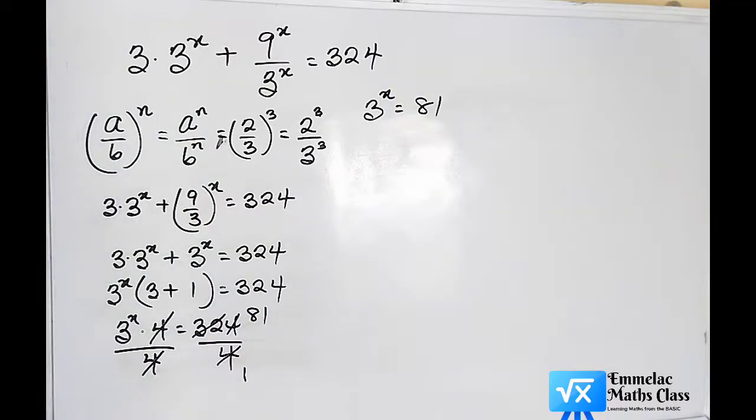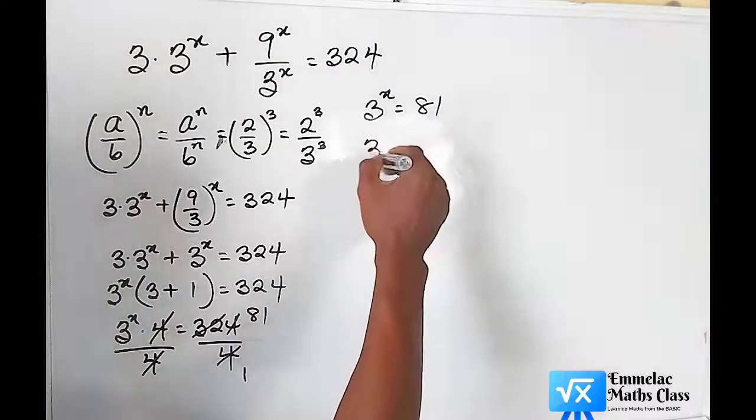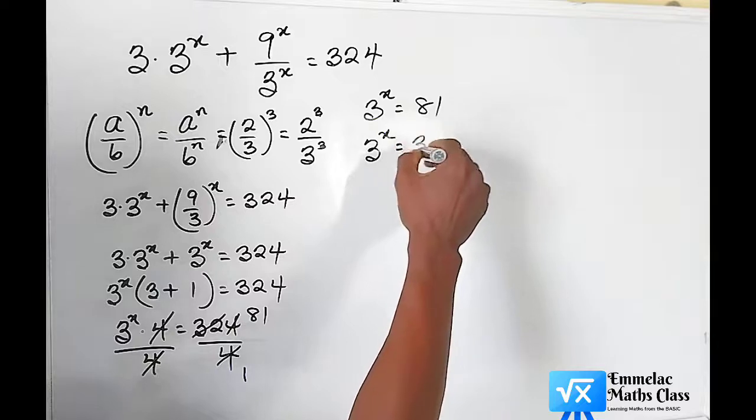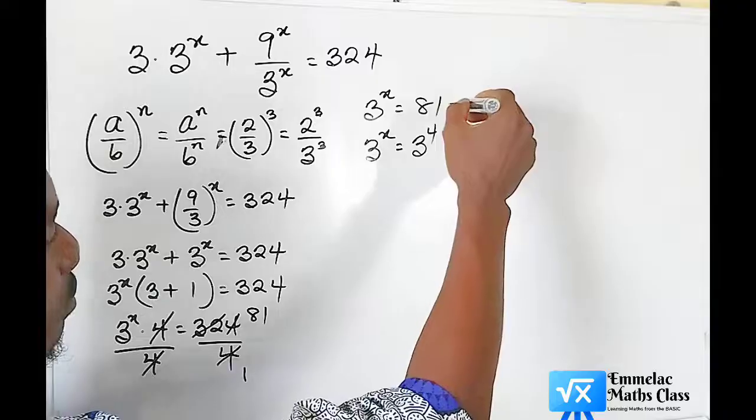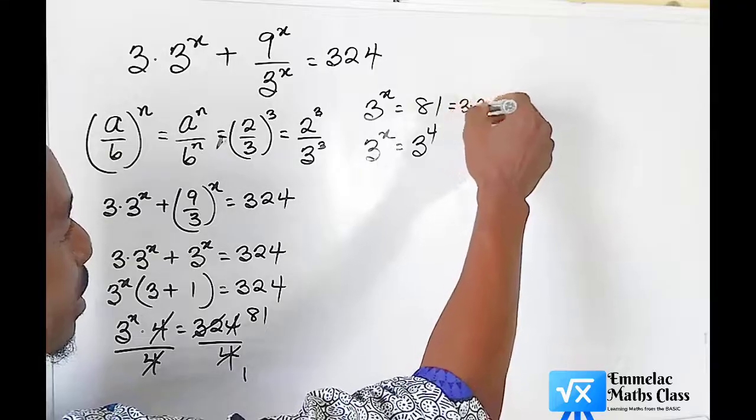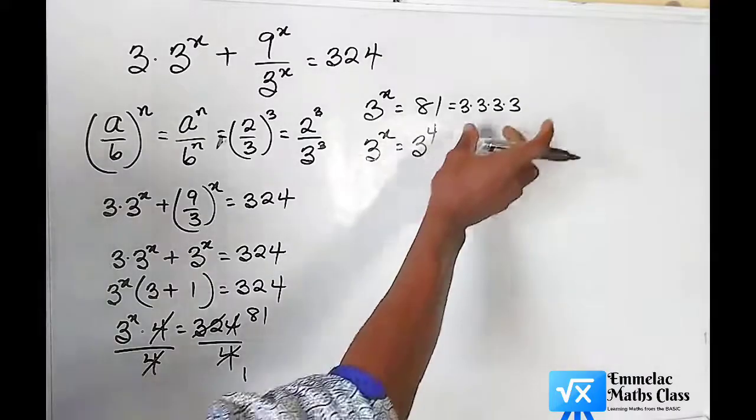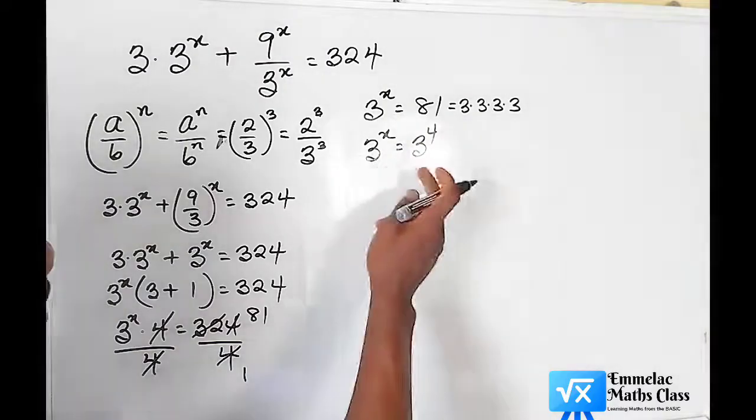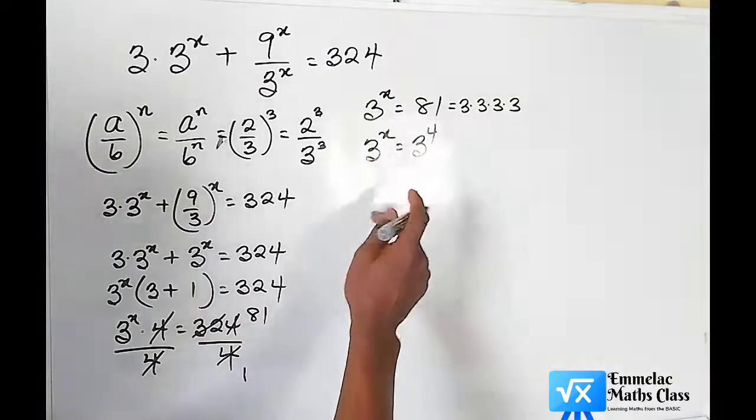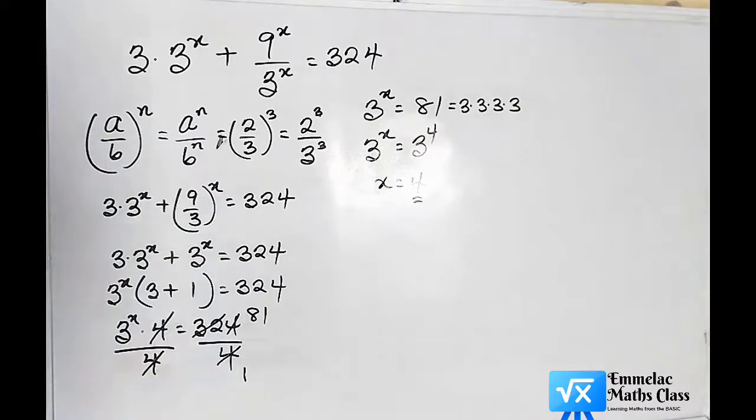Now since on the left hand side we have a base of 3, let us reduce 81 to a base of 3. So here we have 3 raised to the power of x equals 3 raised to the power of 4. And the reason is, we get 81 by multiplying 3 times 3 times 3 times 3, that would be 3 in 4 places. And in form of index you have 3 raised to the power of 4. And since we have the same base on both sides, it implies that our x equals 4 as the final answer.